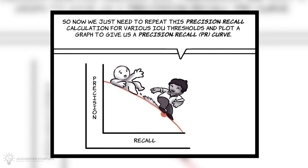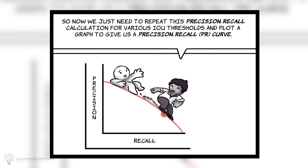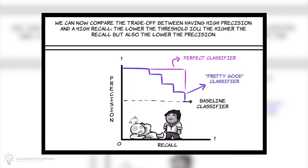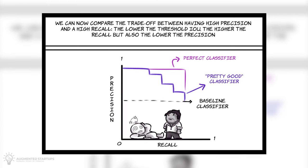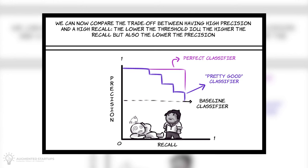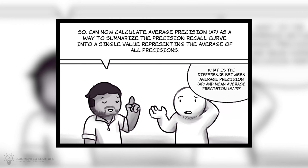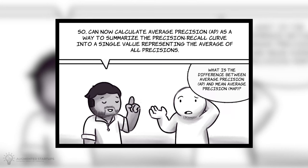So, now we just need to repeat this precision recall calculation for various IOU thresholds and plot a graph to give us the precision recall curve. We can now compare the trade-off between having high precision and a high recall. The lower the threshold IOU, the higher the recall, but also the lower the precision. So, now we can calculate average precision, AP, as a way to summarize precision recall curve into a single value representing the average of all precisions.